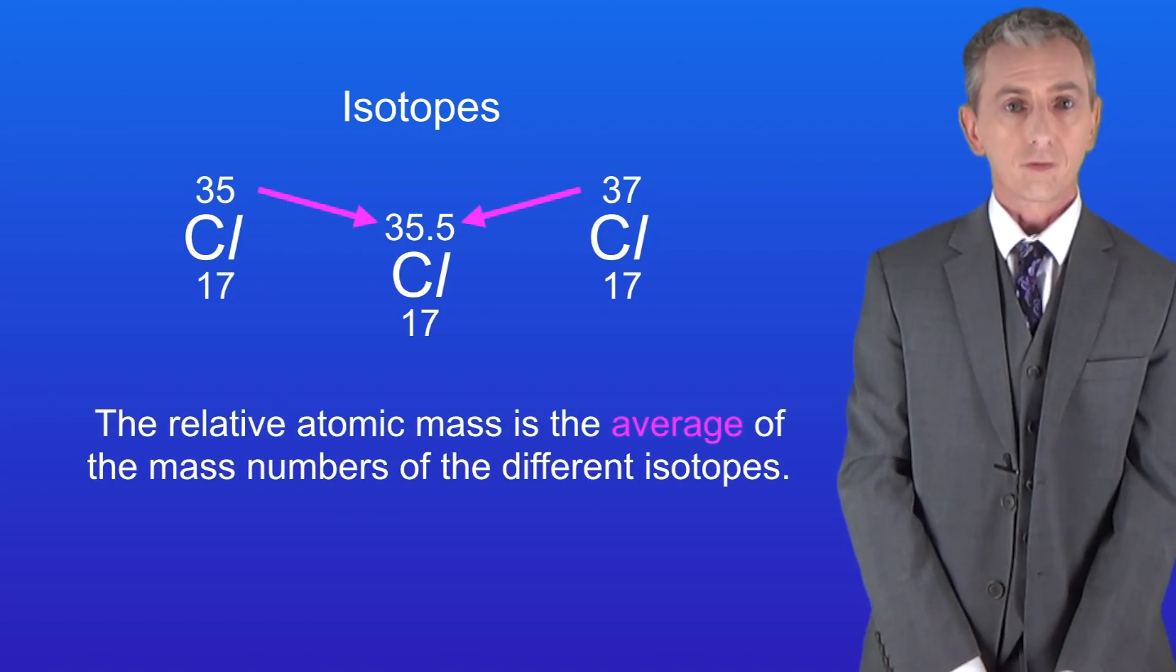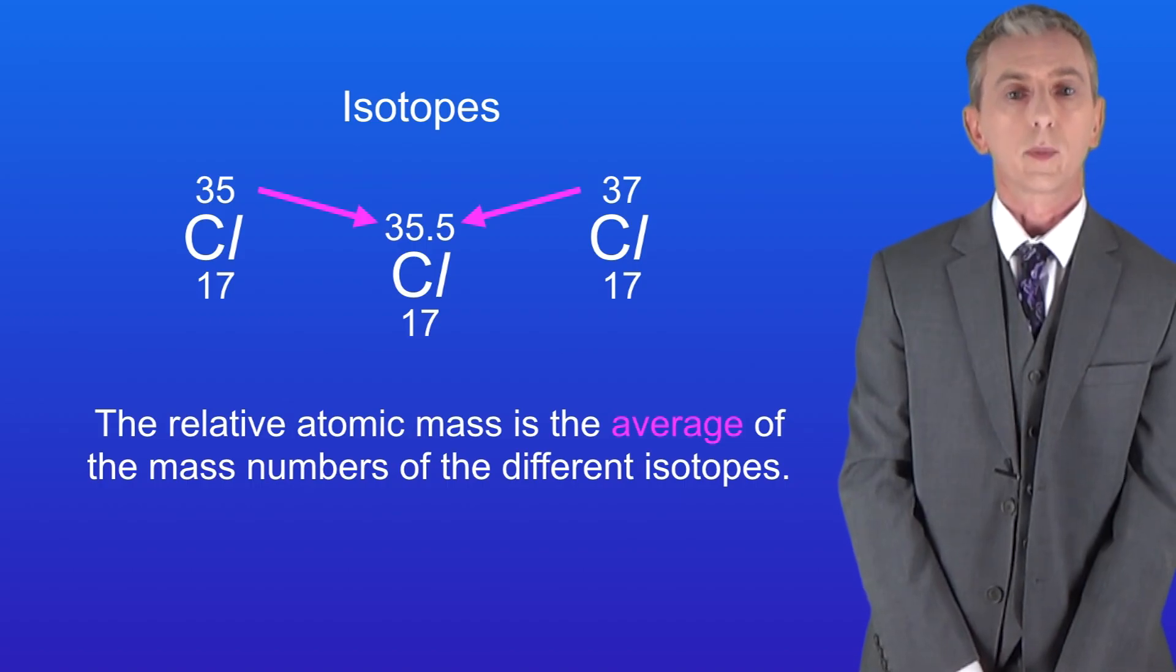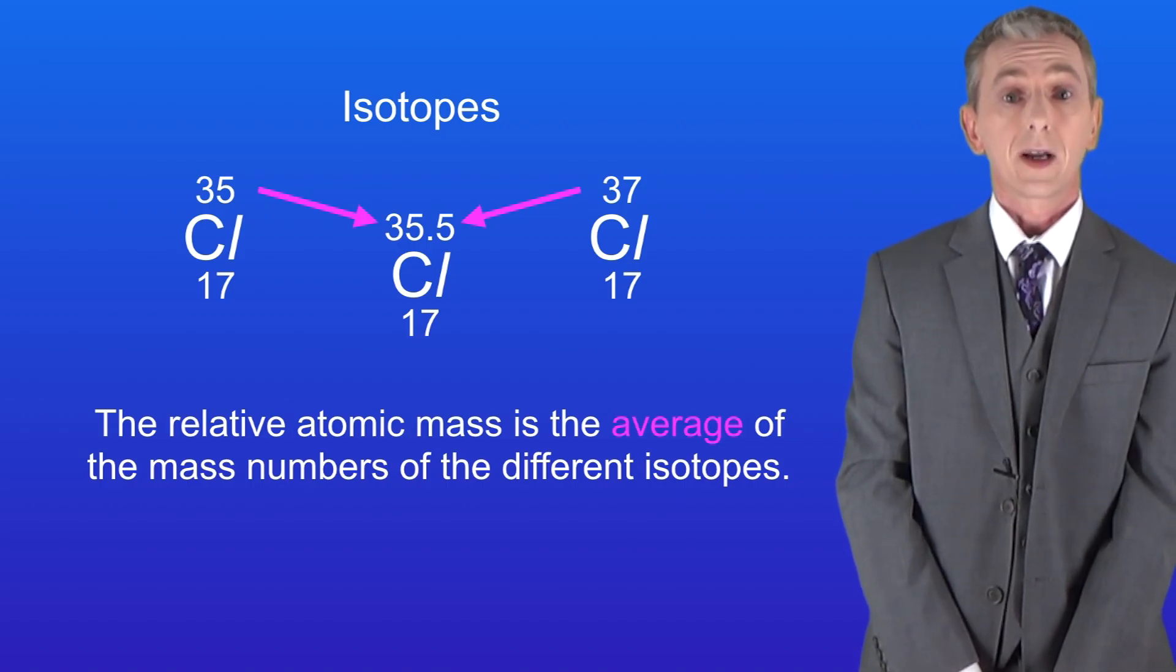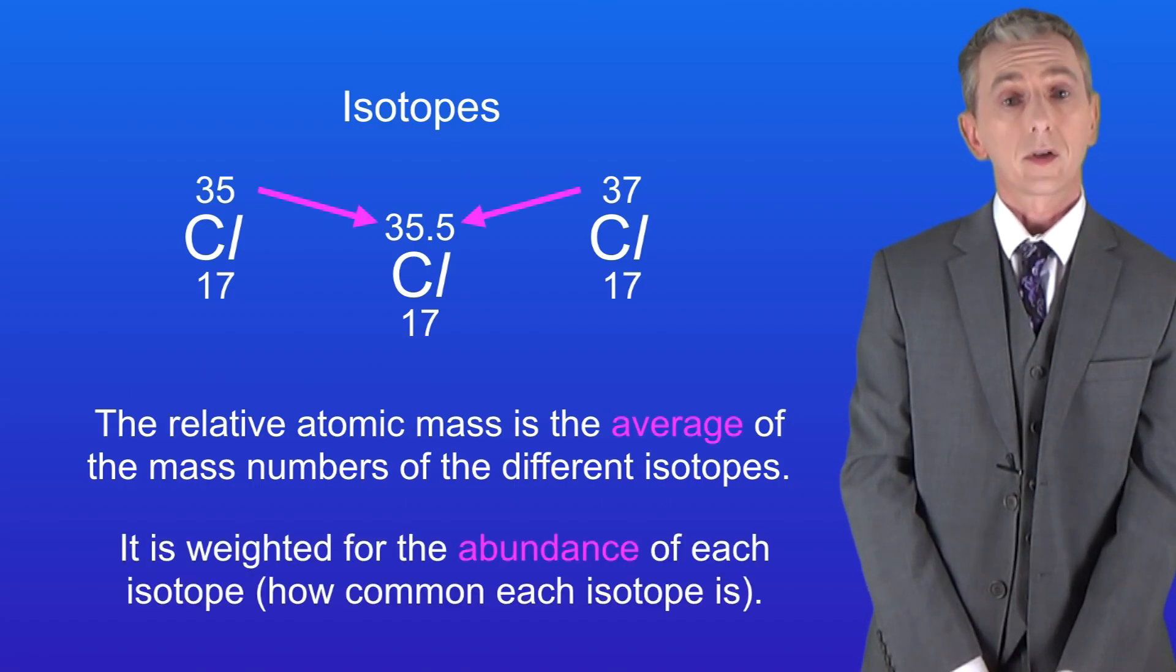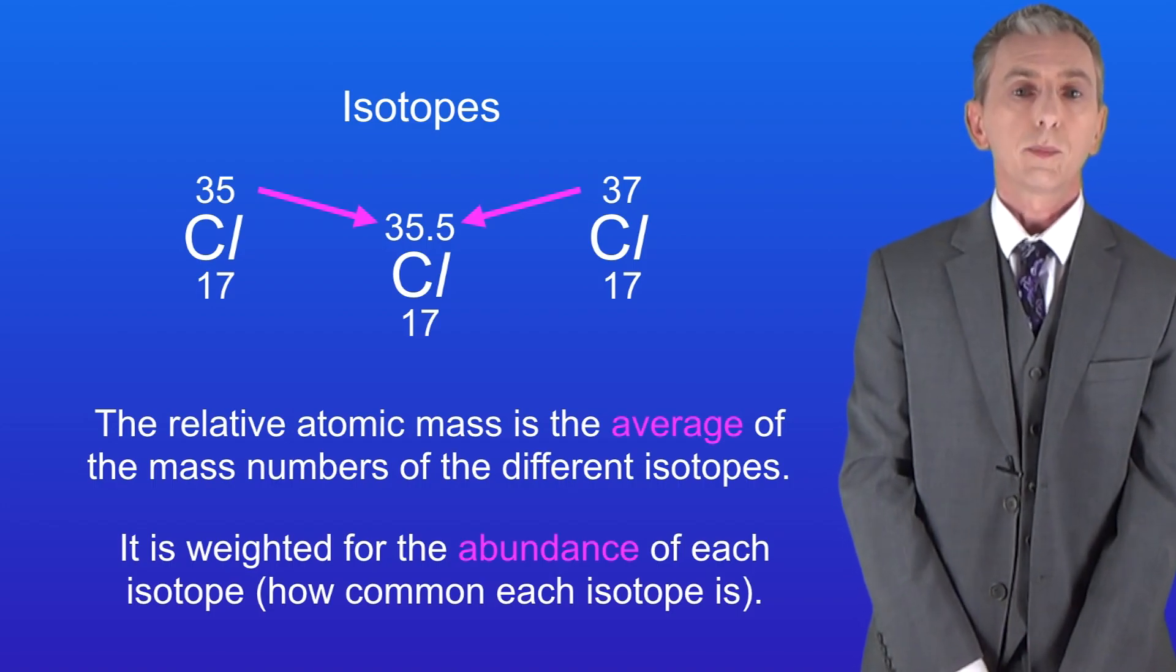The answer is that we take an average of the mass numbers for each isotope. Scientists call this the relative atomic mass. However, there is one extra point. The relative atomic mass is weighted for the abundance of each isotope. The word abundance tells us how common each isotope is.